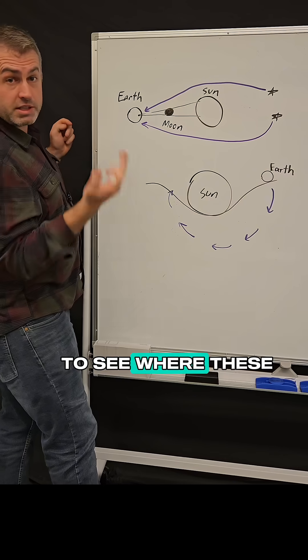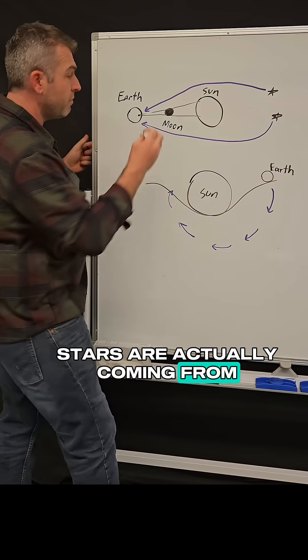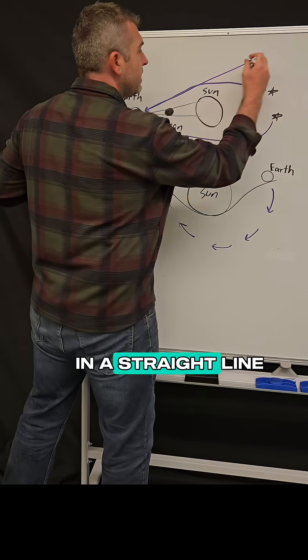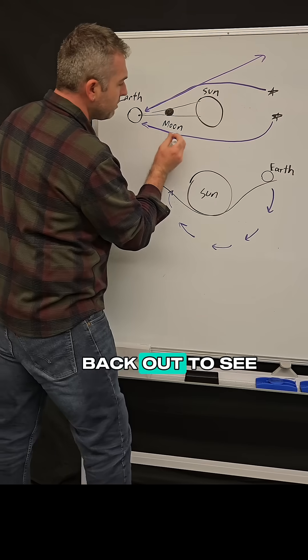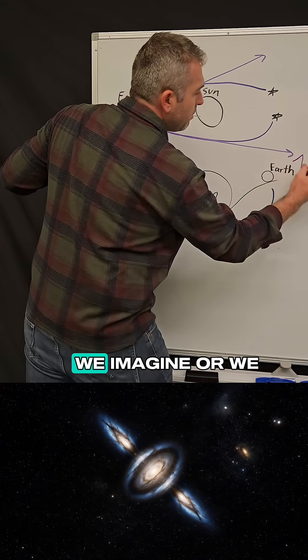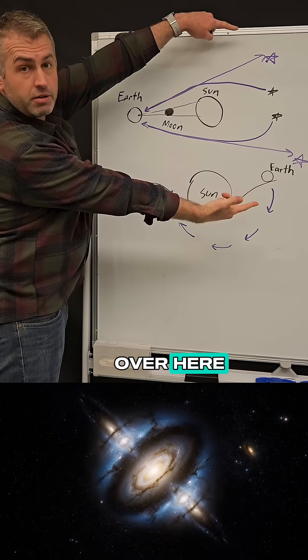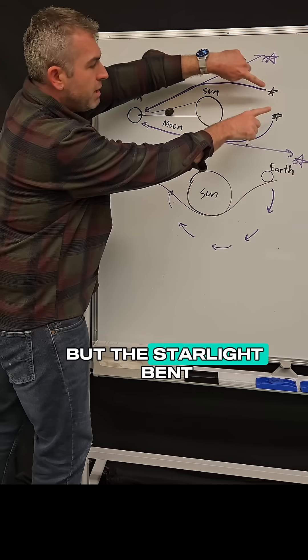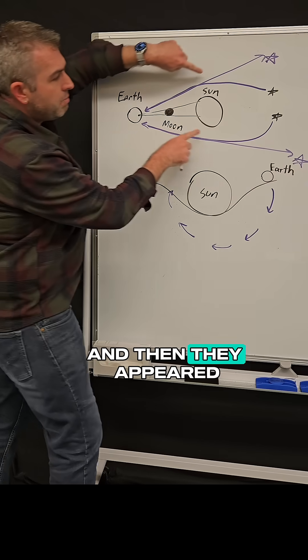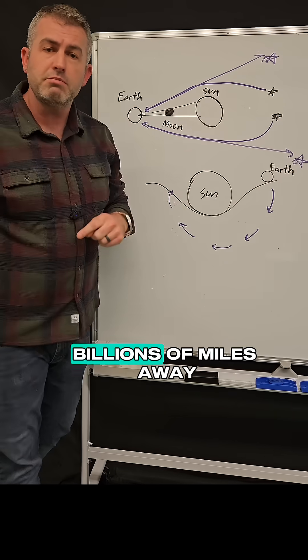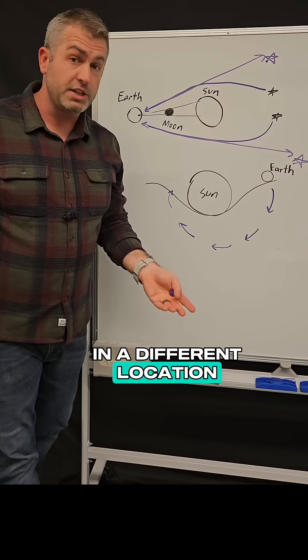And so when we look out to see where these stars are actually coming from, we assume light travels in a straight line. So when we look back out to see where the starlight's at, we imagine or we see a phantom star over here. So the stars are actually here but the starlight bent around the Sun and then they appeared to be over here, billions of miles away in a different location in space.